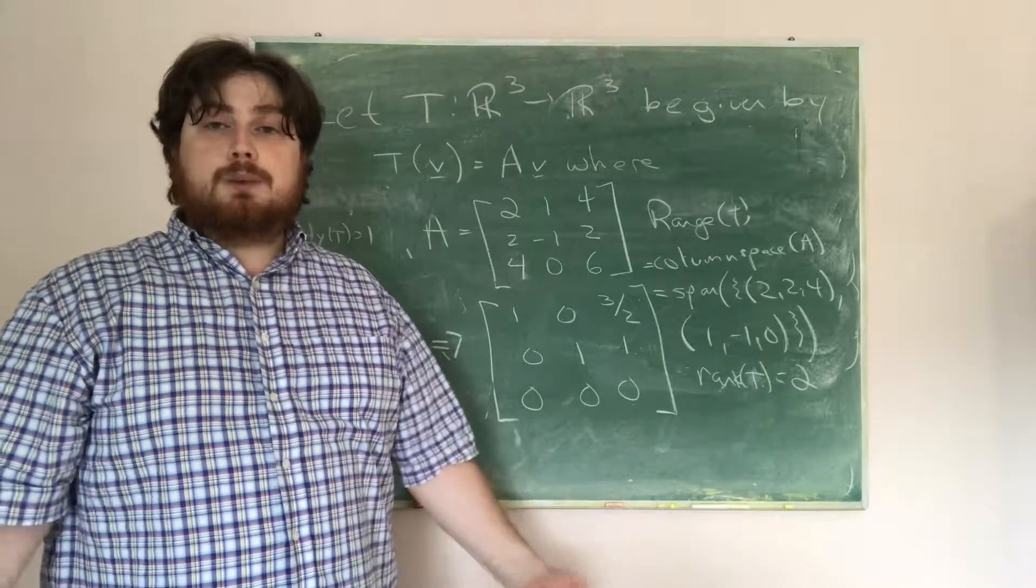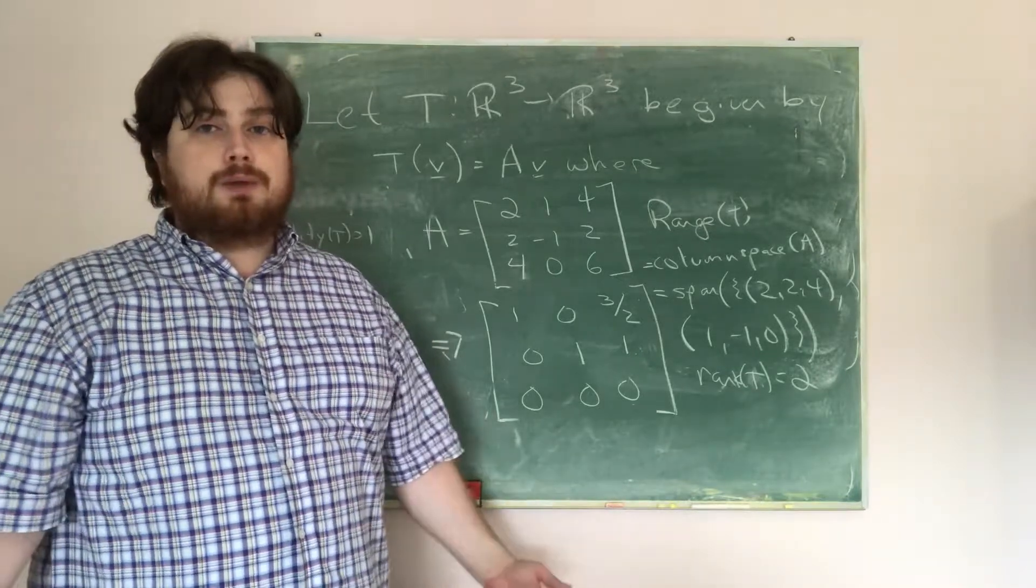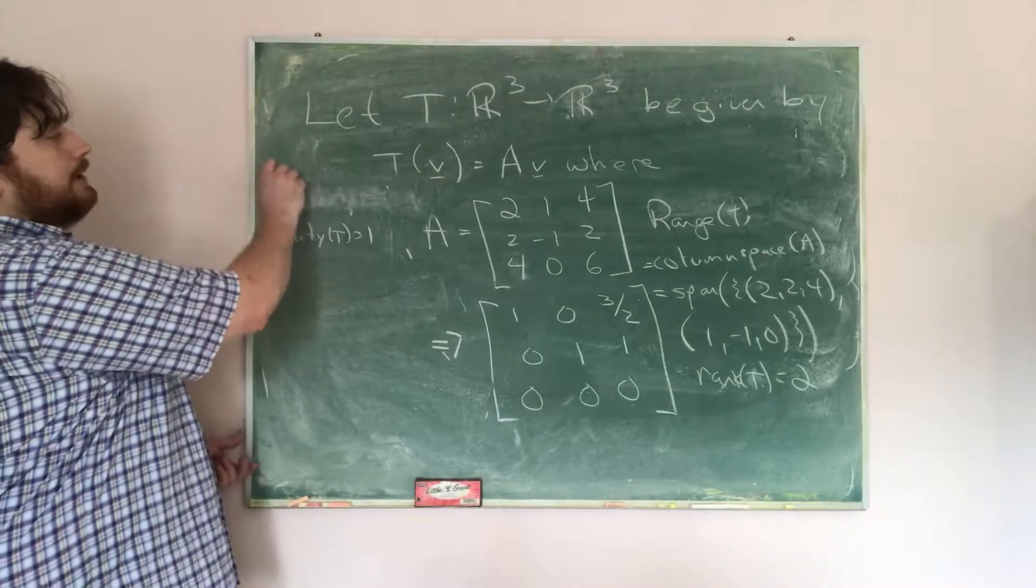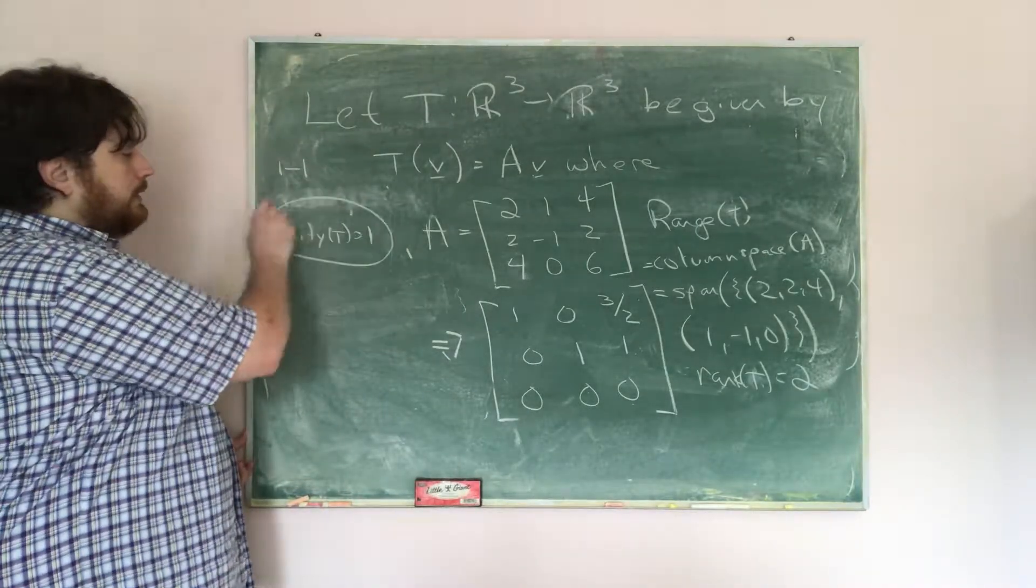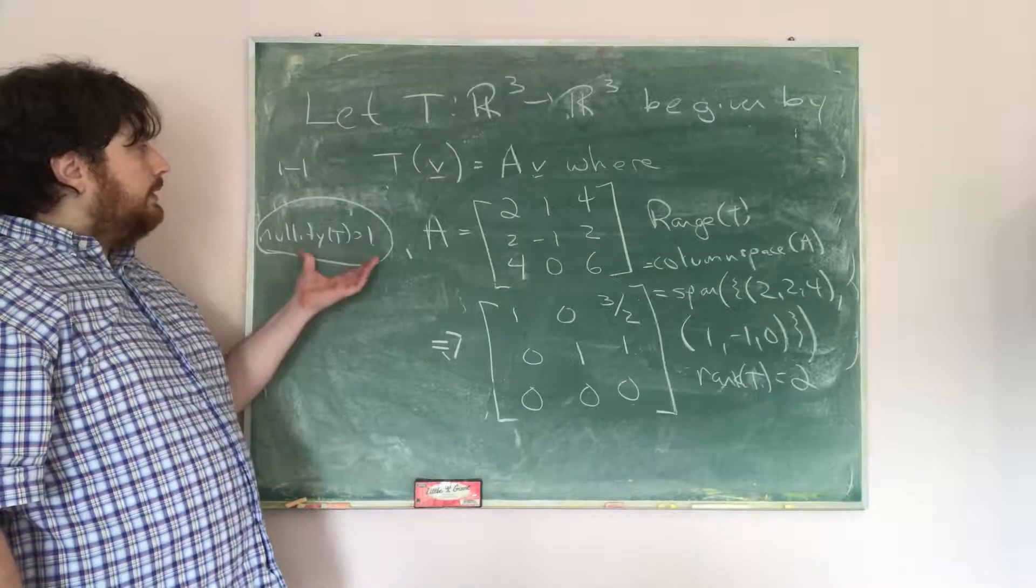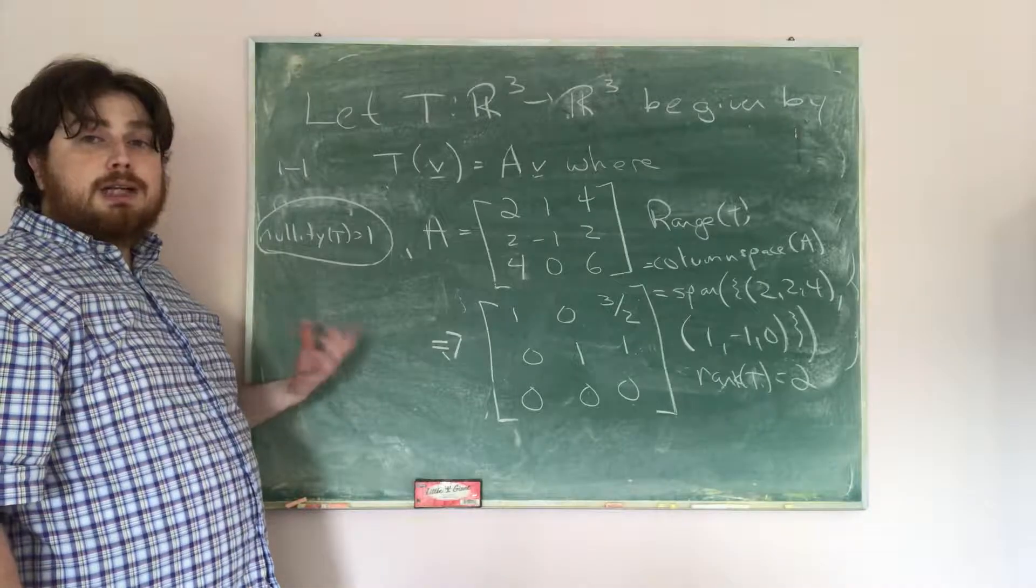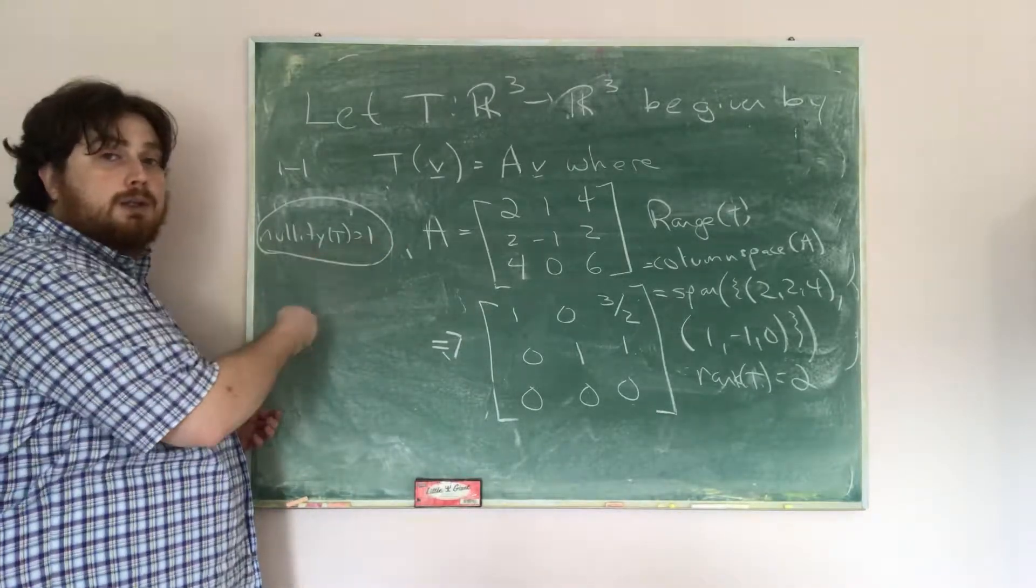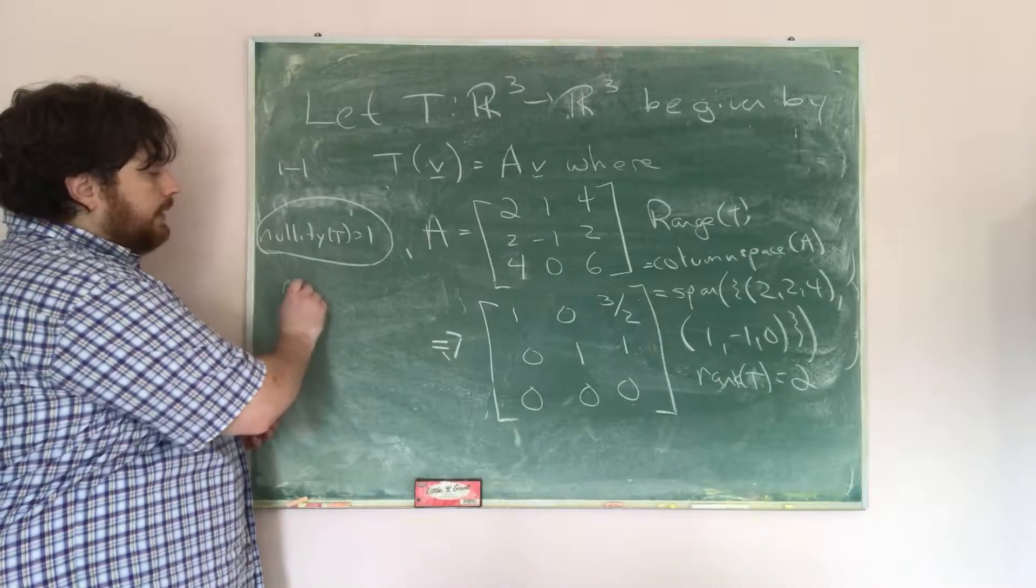The last thing we need to do is figure out, is this 1 to 1? Is it onto? Is it an isomorphism? So what we'll notice here is that if we're checking 1 to 1, we just want to check the nullity. So for 1 to 1, if the nullity is 0, then I'm 1 to 1. If the nullity is not 0, then I'm not 1 to 1. Notice the nullity is 1, which is not equal to 0, so we are not 1 to 1.